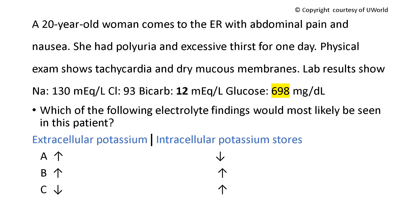Here's a typical question about DKA. A 20-year-old woman comes to the ER with abdominal pain and nausea. She had polyuria and excessive thirst for one day. Physical exam shows tachycardia and dry mucous membranes. She's obviously dehydrated. Lab results show sodium chloride.